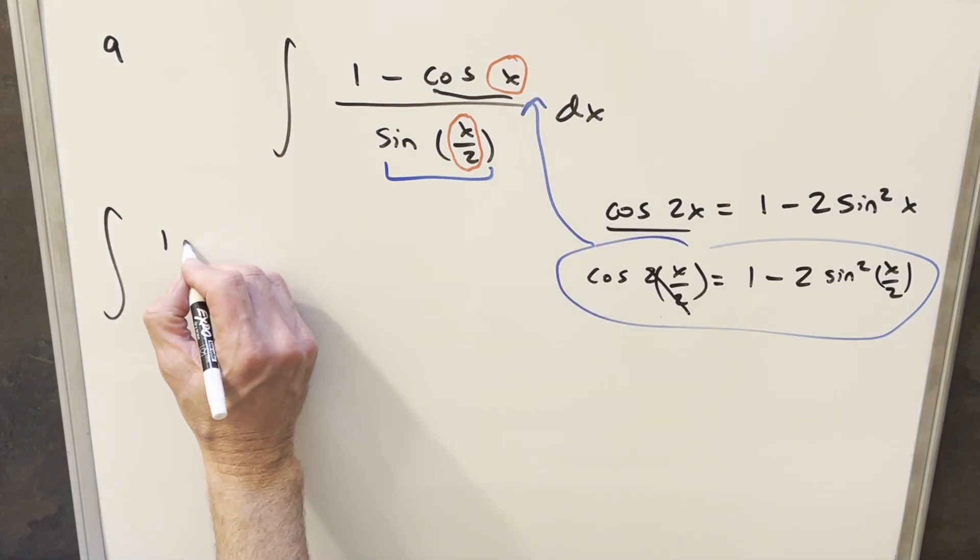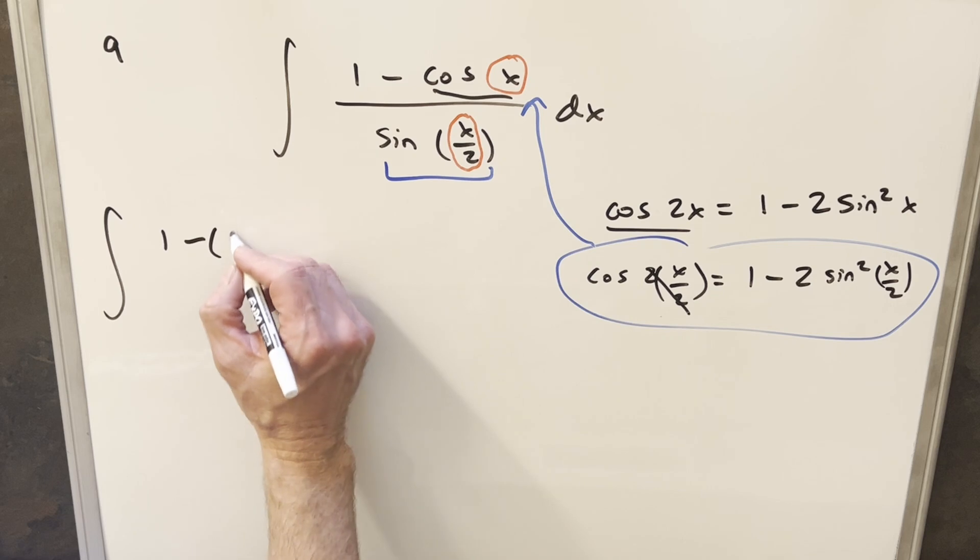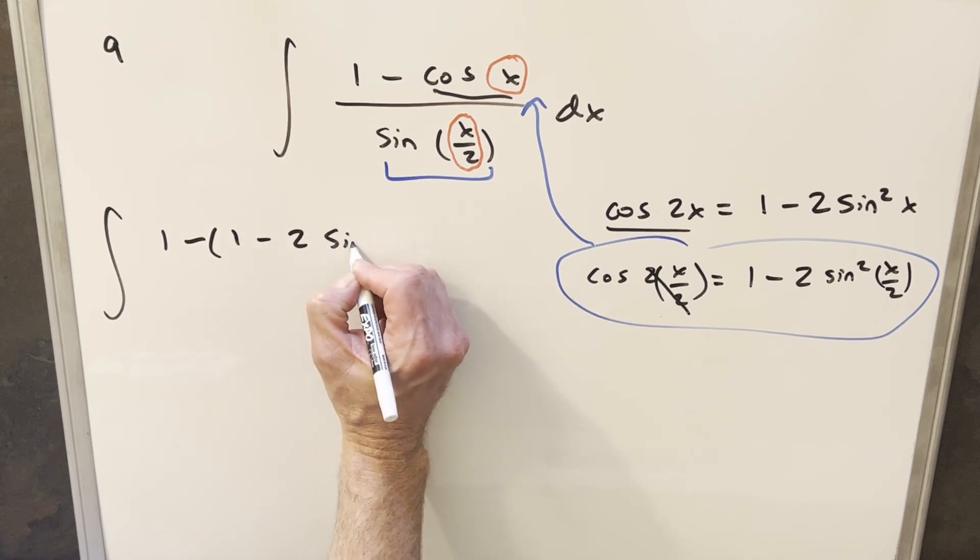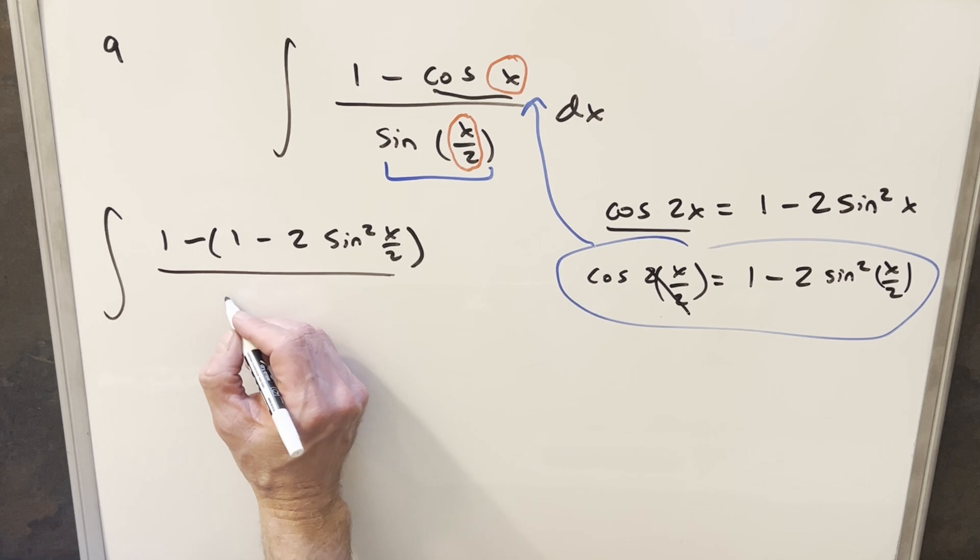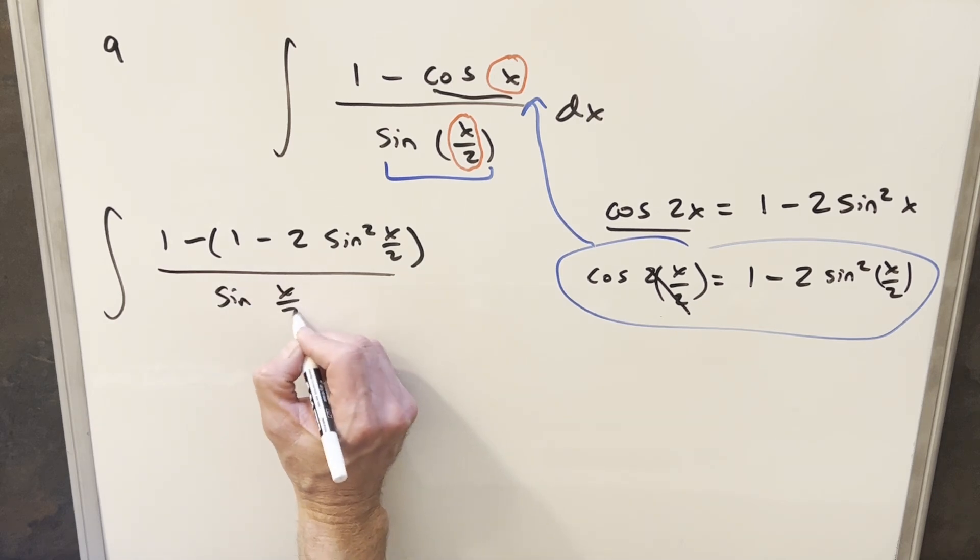So just doing this, we're going to have one minus this thing which is one minus two sine squared x over two. Then the denominator stays the same, we're just going to have our sine x over two here dx.